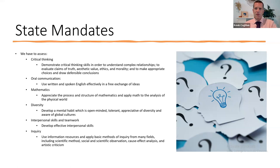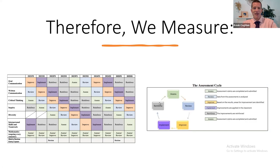The next question is: how do we evaluate the state mandates? We built a rubric as a team, then send it out, gather up the data, assess it, put it all together, develop an action plan, implement the action plan, and then assess again. This is how we measure oral communication, written communication, critical thinking, inquiry, diversity, interpersonal skills and teamwork, and mathematics.